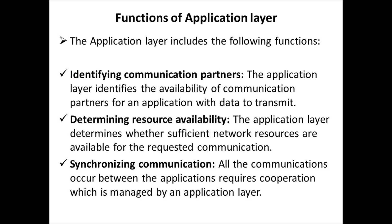The Application Layer includes the following functions. First, identifying communication partners — the Application Layer identifies the availability of communication partners for an application with data to transmit. Second, determining resource availability — it determines whether sufficient network resources are available for the requested communication. Third, synchronizing communication — all communications between applications require cooperation, which is managed by the Application Layer.